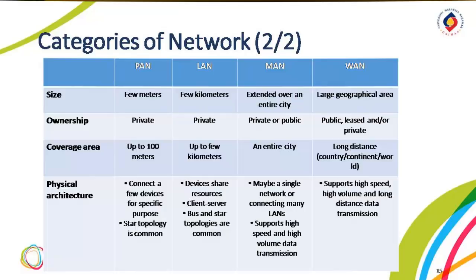What about the Metropolitan Area Network, or MAN? A MAN is a network with a size between a LAN and a WAN. It normally covers the area inside a town or a city. It is designed for customers who need high-speed connectivity, normally to the internet, and have endpoints spread over a city or part of a city. An example is a cable TV network that originally was designed for cable TV, but today can also be used for high-speed data connection to the internet.